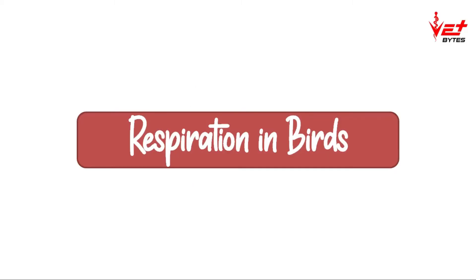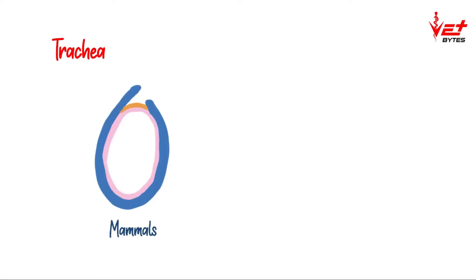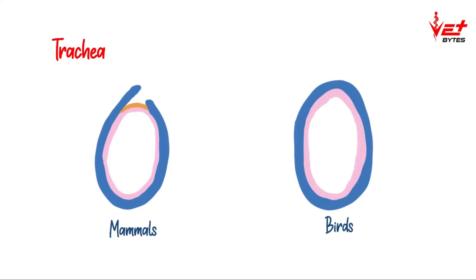Hello everyone, welcome back. So far we have seen about respiration in mammals. In this video we are going to see about respiration in birds. Let's start with the differences in birds. The first one is the trachea. We know that mammals have incomplete tracheal cartilages, but in case of birds we have complete tracheal cartilages.